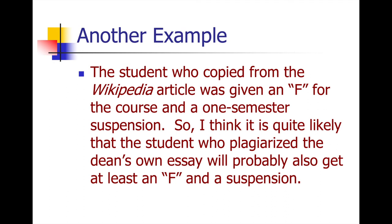Another example: the student who copied the Wikipedia article was given an F and a one-semester suspension. So it's quite likely the student who plagiarized the dean's own essay will also get at least an F and a suspension. We know what happened in the less severe offense of copying Wikipedia; if that result occurred there, we can predict at least the same — or worse — in the more significant violation of plagiarizing the dean's own essay. That is the argument by degree.